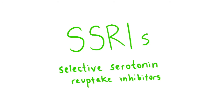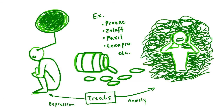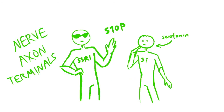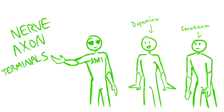SSRIs — selective serotonin reuptake inhibitors — are the most commonly prescribed type of antidepressant and can also be used to treat anxiety. They treat depression by increasing the levels of serotonin in the brain. SSRIs work by blocking the reuptake of serotonin back into neurons, making more serotonin available to act as messengers between neurons. SSRIs are selective because they only target serotonin and leave other neurotransmitters alone.